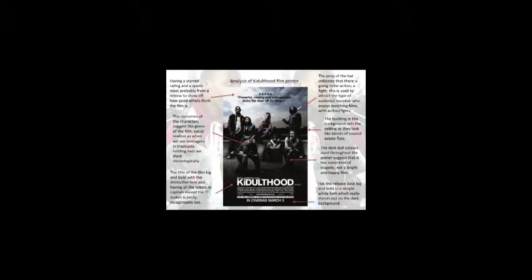The prop of the bat indicates that there is going to be action — a fight. This is used to attract the type of audience member who enjoys watching films with action and fights. The buildings in the background set the scene as they look like blocks of council estate flats. The dark, dull colours used throughout the poster suggest some kind of tragedy — not a bright, happy film. The release date is big and bold in a simple white font, which really stands out on the dark background.